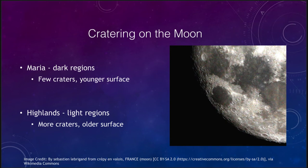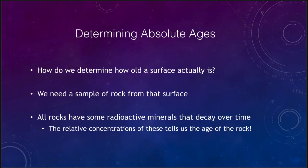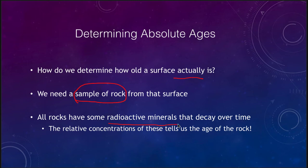To determine absolute ages — actual ages — we need a sample of rock from the surface. When rocks solidify they have some radioactive minerals that will decay over time, and we can look at the relative concentrations of these to determine how old that rock is. Once we figure out how old the rock is, that helps us get absolute ages and lets us calibrate our crater counts that we would use to determine other ages.